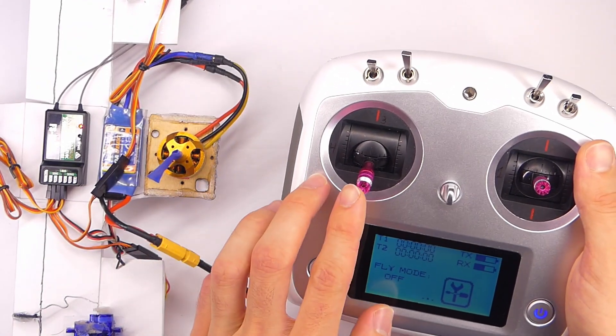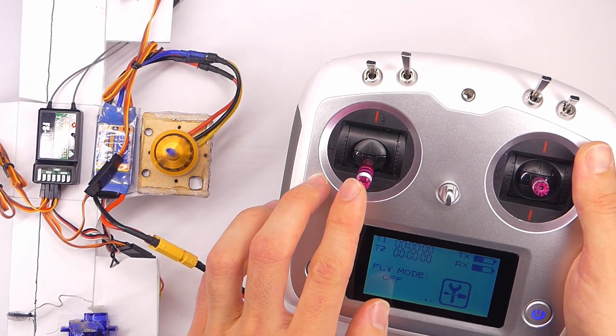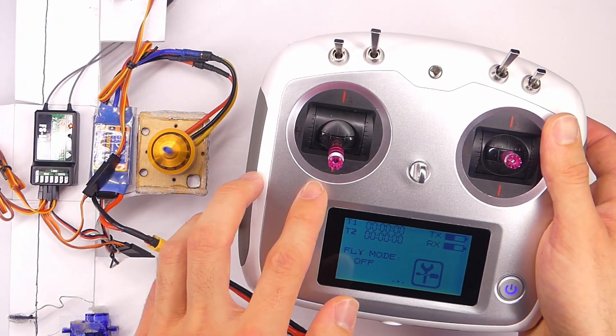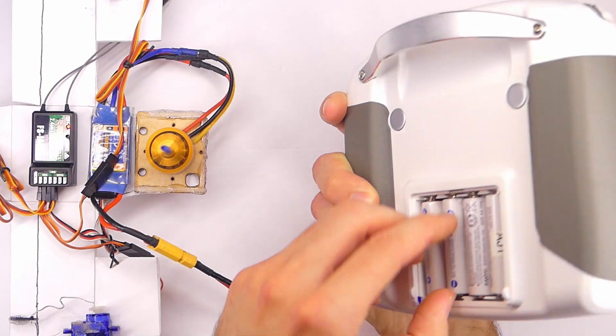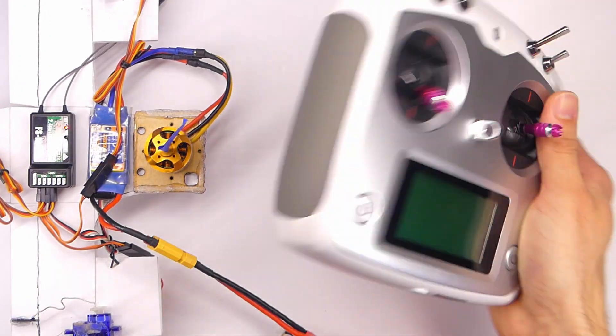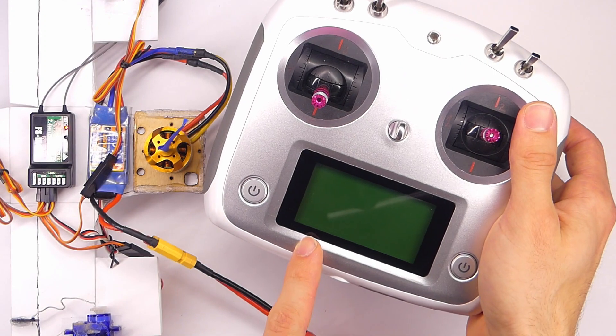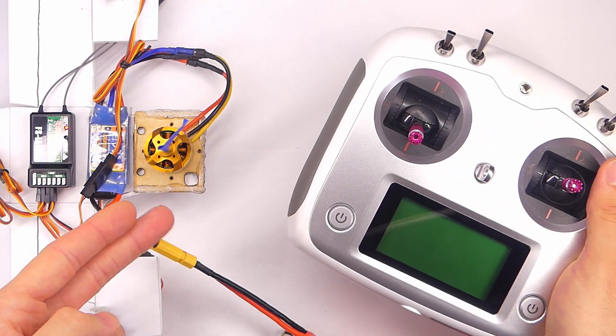So we'll give it some throttle here. It doesn't have to be a lot. So it's going and then we'll take out the battery and then it shuts off. So our transmitter shuts off. The motor shuts off.